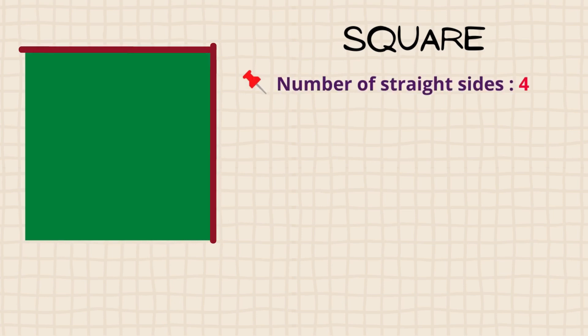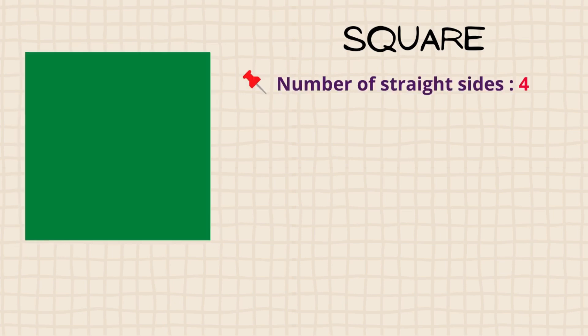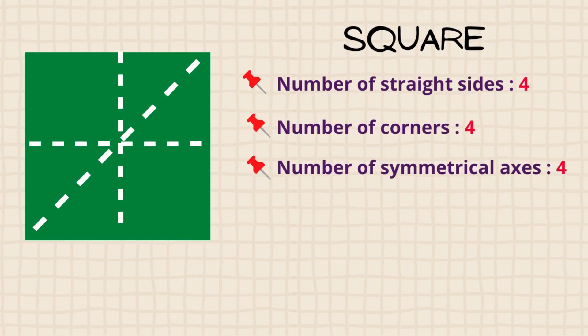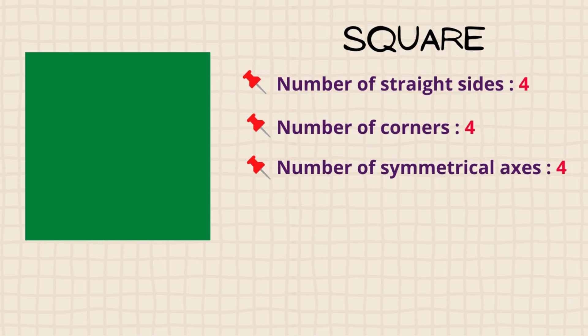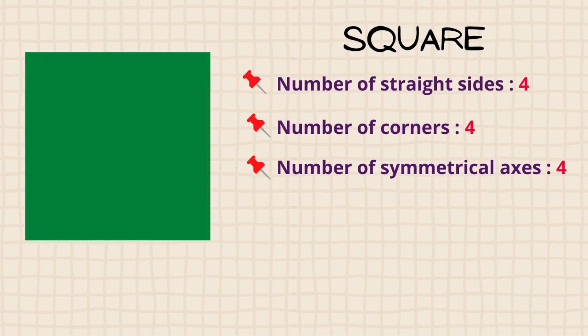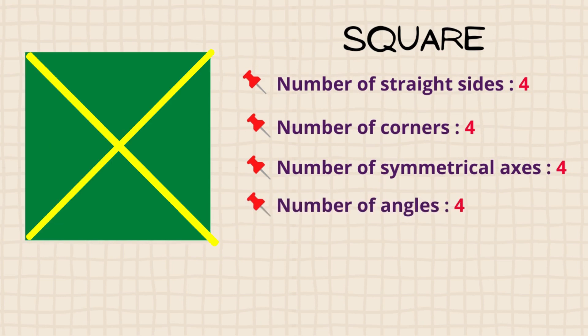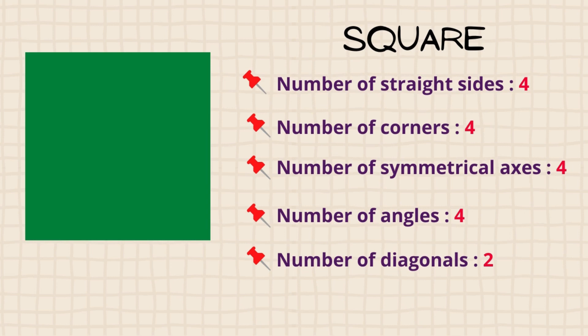This is a square. A square has four straight sides, four corners, four symmetrical axes, four angles, and two diagonals.